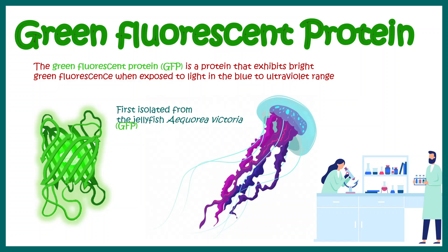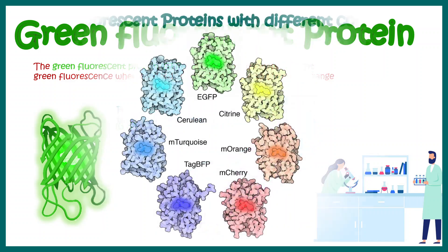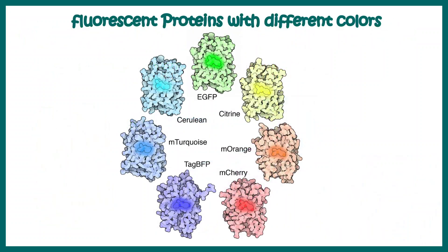In this video we'll talk about several applications of GFP. Apart from green fluorescence protein, scientists have now generated other colored fluorescence proteins such as citrine, mCherry, mTurquoise, and many more.